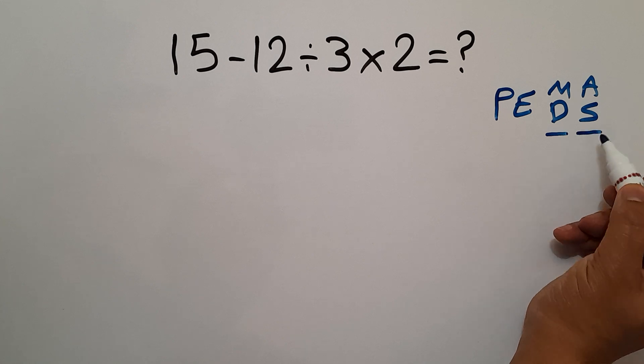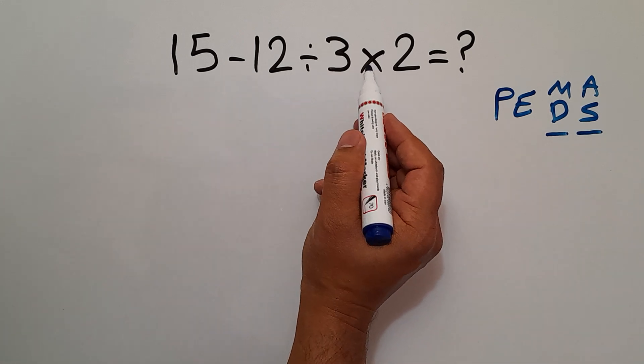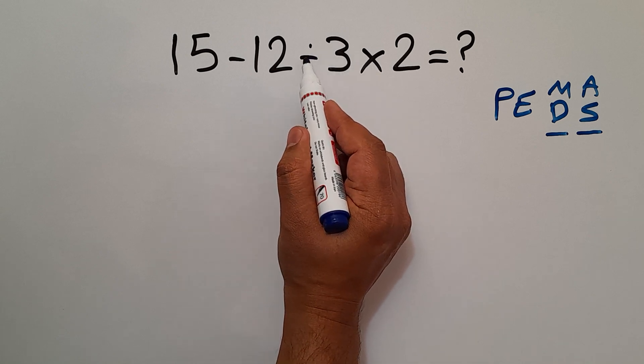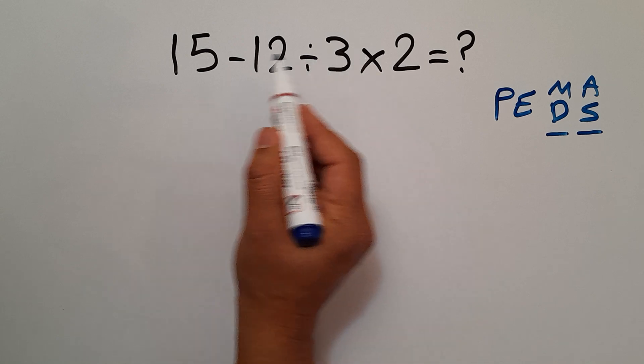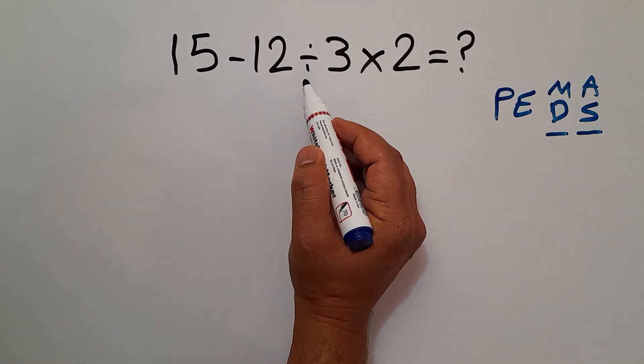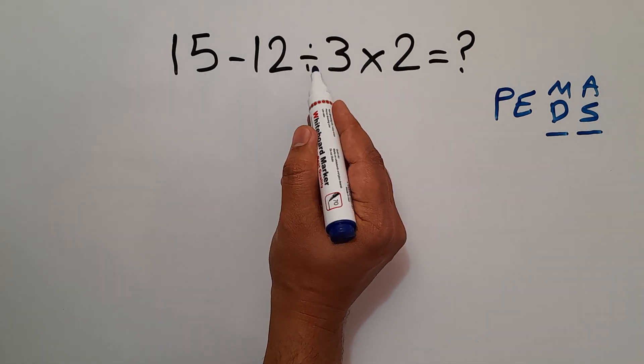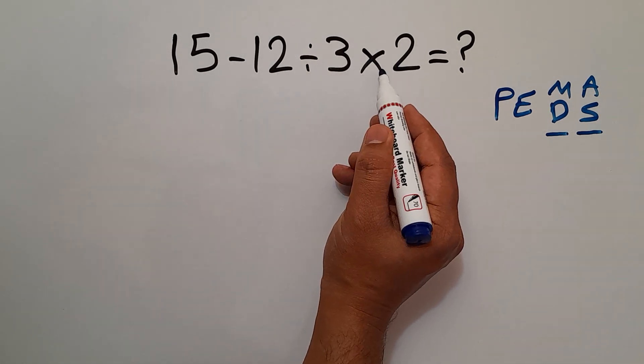And the same applies to addition and subtraction. So here, multiplication and division have higher priority than subtraction, and also multiplication and division have equal priority and we have to work from left to right. So first this division, then this multiplication, and finally this subtraction.